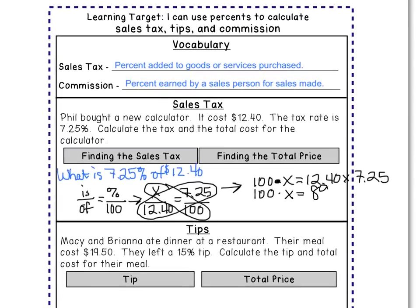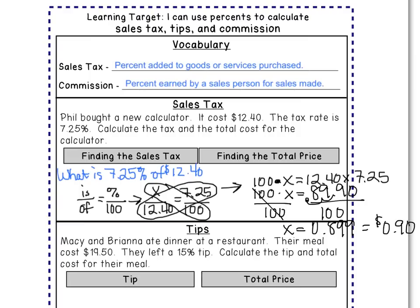So we have 100x = 89.90. Then we divide both sides by 100 to undo the multiplication. We get x equals 0.899, but since we're talking about money, we need to round to the nearest hundredth. So the sales tax is 90 cents.